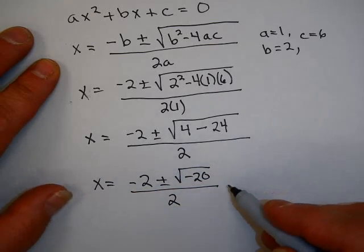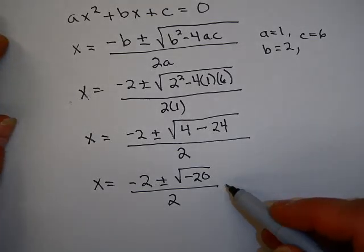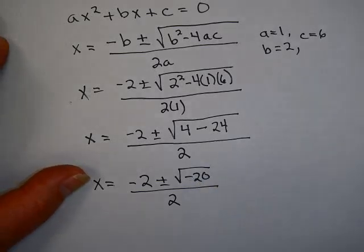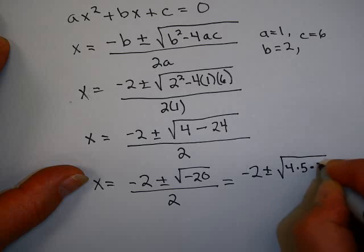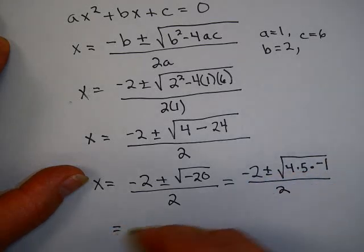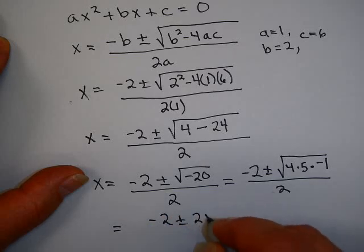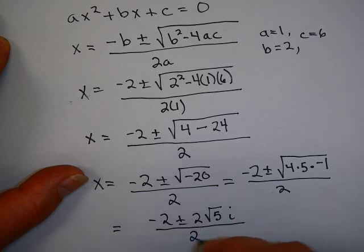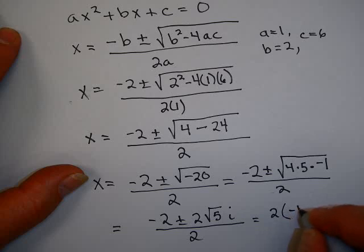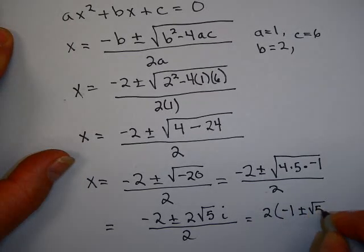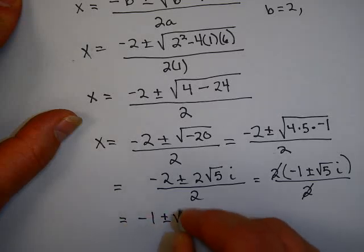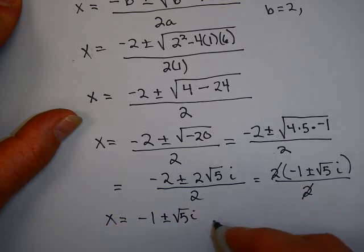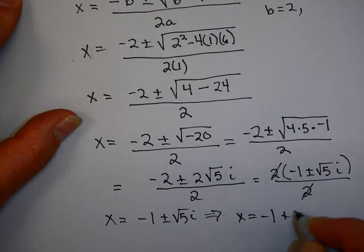On the previous assignment you might have written 'no real solution,' but now that you know complex numbers, you can handle √(−20). That's −2 ± √(4·5·(−1)) / 2, which is −2 ± 2√5·i over 2. Factoring a 2 out of the top, the 2s divide out, giving a final solution of x = −1 ± √5·i.